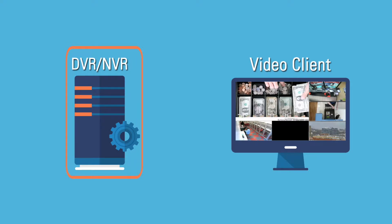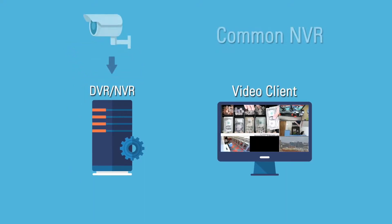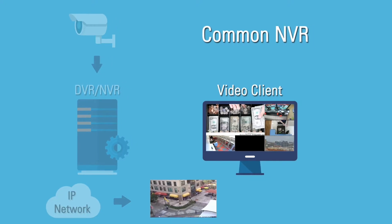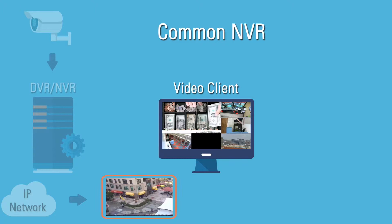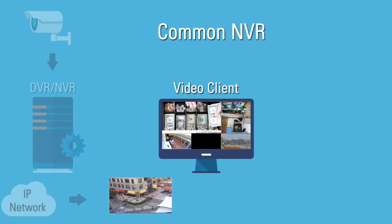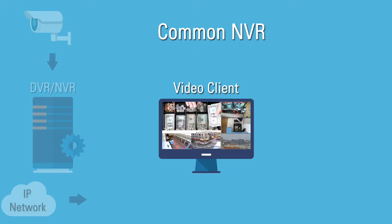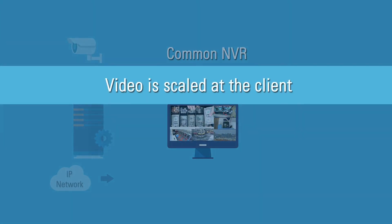A network video recorder, pictured here, receives video from an IP or analog camera at high resolution for recording. When a client application requests live video, the network video recorder will transmit the video at its originally recorded resolution. The video is often too large to fit in the area allocated for it on the screen, so the live video display application must scale it down to a size that will fit on the screen.